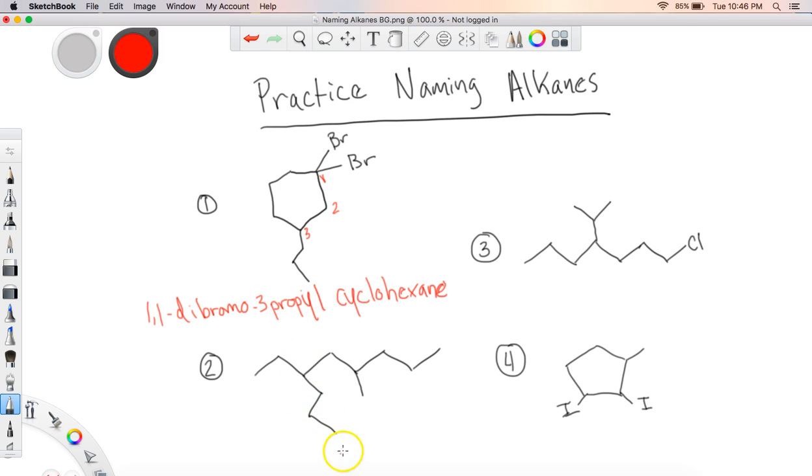All right, number two. This one's a little bit tricky because you have to keep in mind that the longest carbon chain starts down here. So it's one, two, and so forth as I count. So one, two, three, four, five, six, seven, eight, nine. And so this would be a nonane.